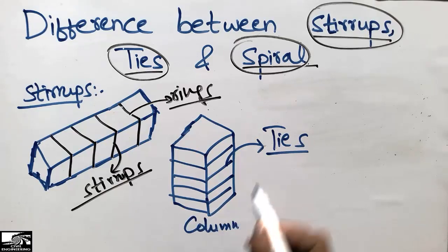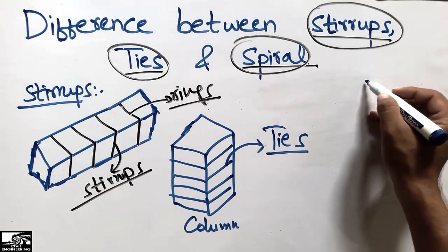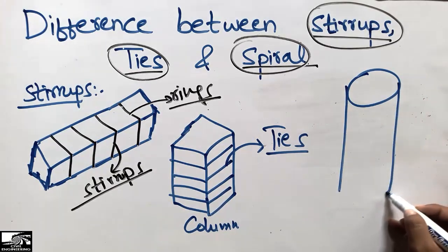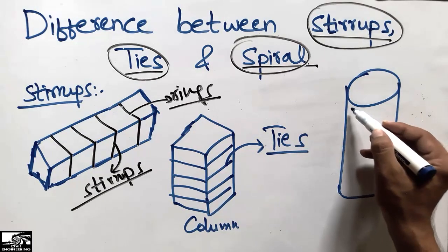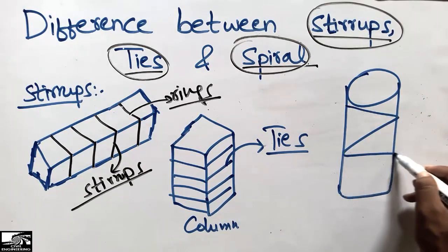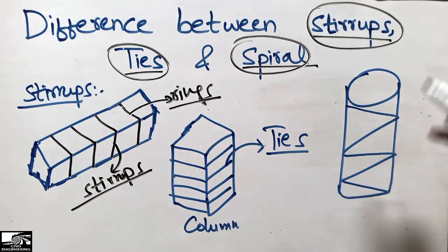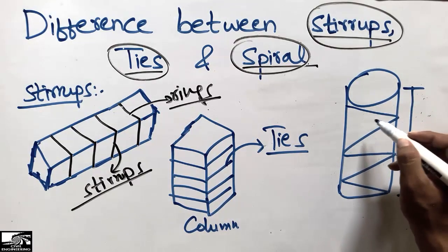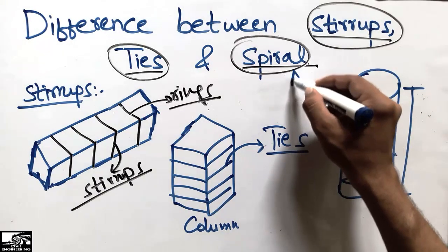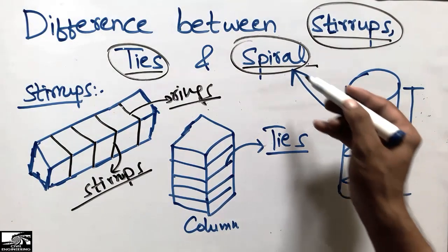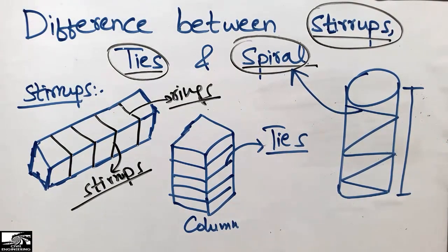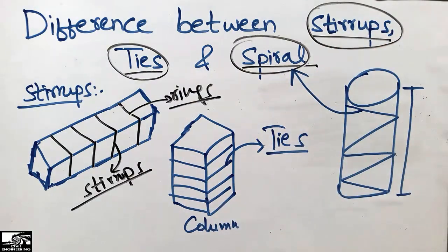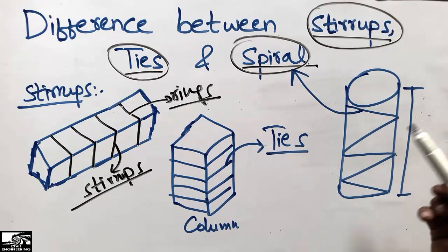However, spirals are also used in columns — specifically in circular columns. In a circular column, we place transverse reinforcement throughout the full depth or height of the column, and this reinforcement is known as spiral reinforcement, or simply the spiral.